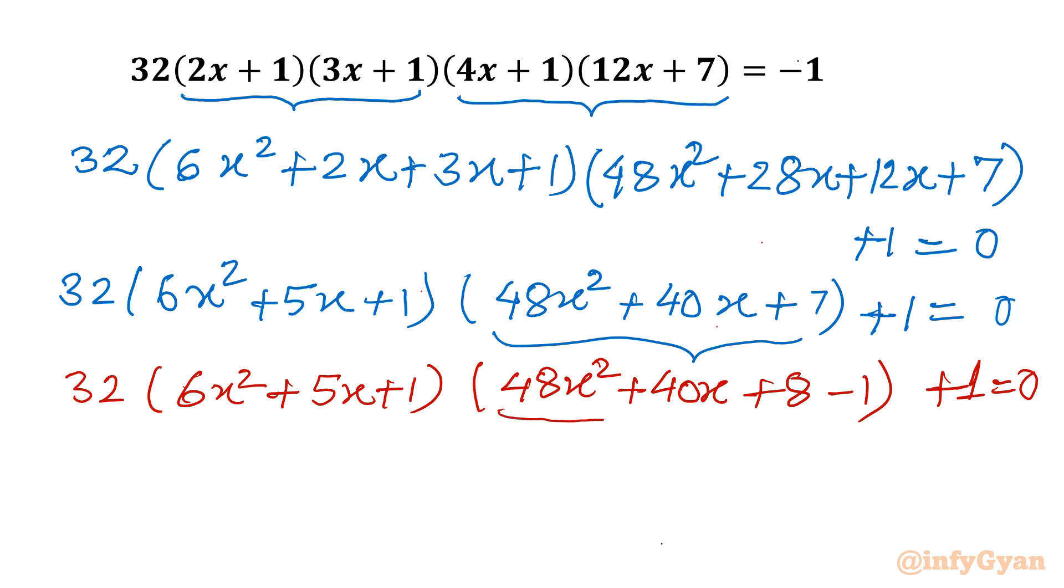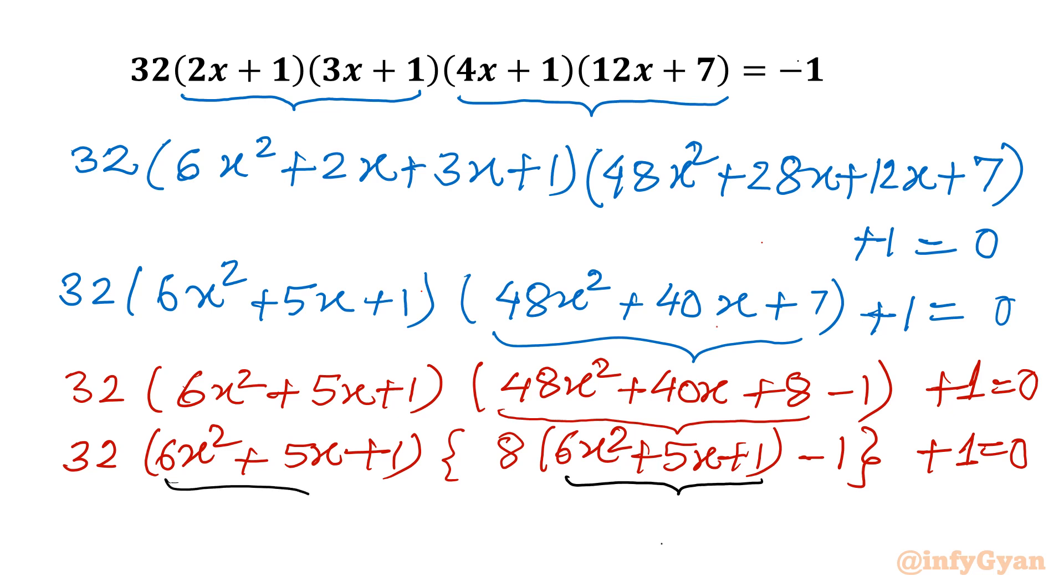Now you can see from these three terms, 8 is common. So I will write 32 times (6x squared plus 5x plus 1). And once you will take 8 common, then you will write in bracket 6x squared plus 5x plus 1. And after that, minus 1 plus 1 as it is. Now you can see substitution is waiting. We will consider this term equal to t. So let us consider 6x squared plus 5x plus 1 equal to t.